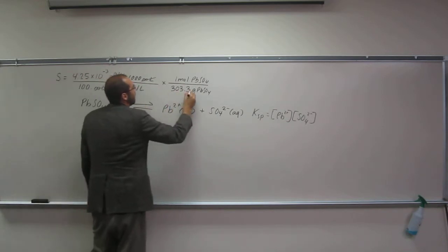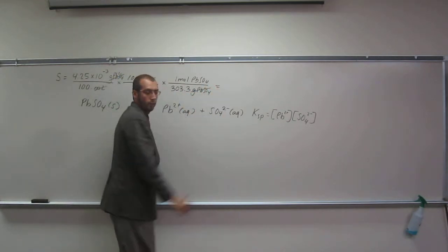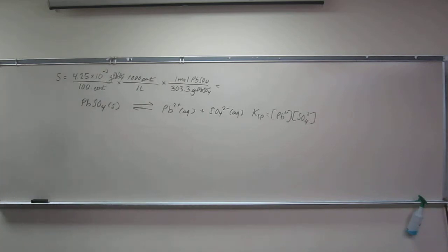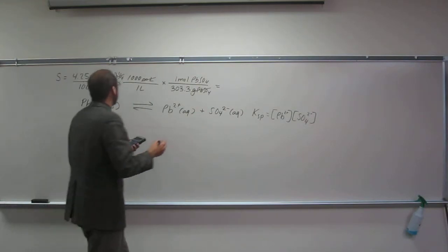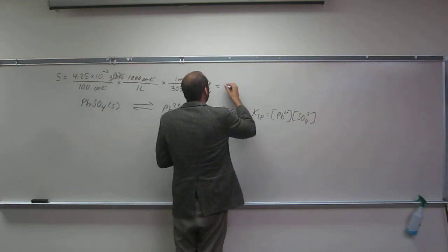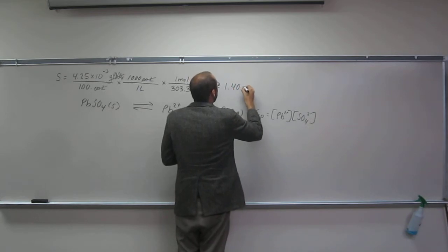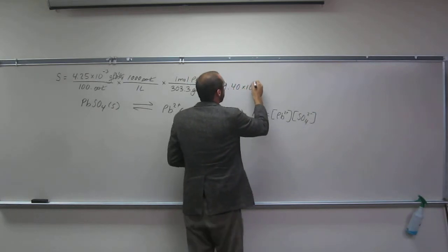Let me do that. Cancel, cancel. We get 4.25 times 100 divided by 100 divided by 303.3.